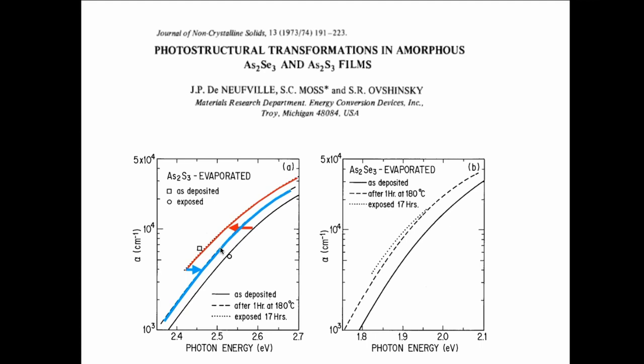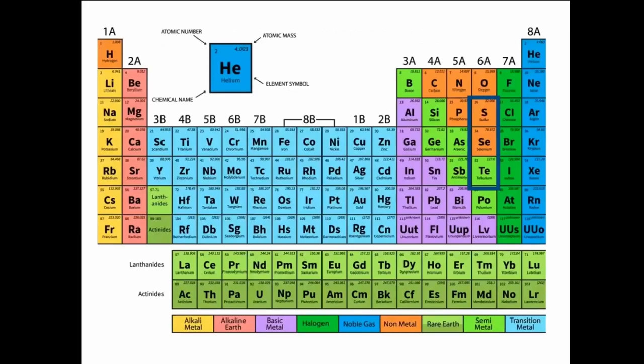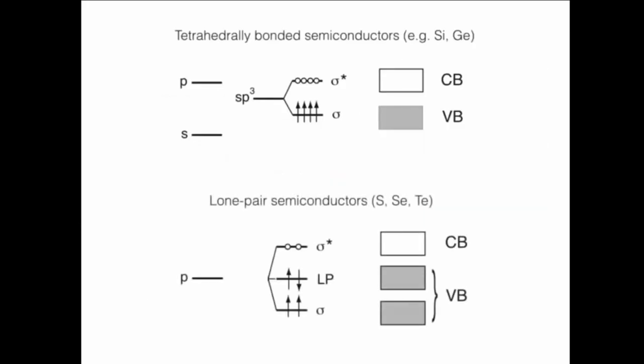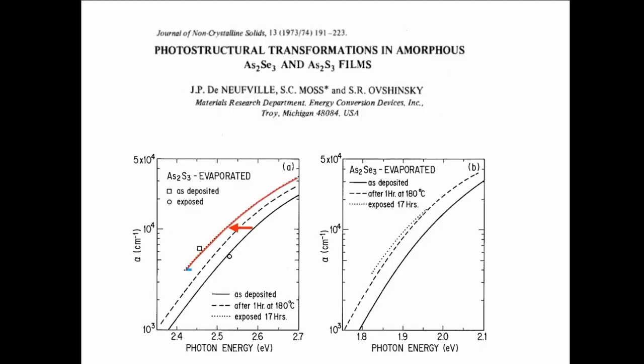The band gap in arsenic sulfide is about 2 eV, so from lone pairs to sigma-star is about 2 eV. The shift in the absorption edge after photodarkening is an arbitrary value — it does not directly correspond to a specific energy level splitting. The photon energy should be around the band gap energy to drive the structural change — essentially, you just need absorption.